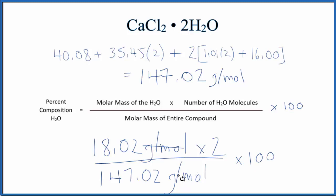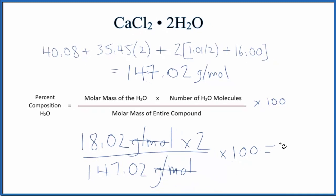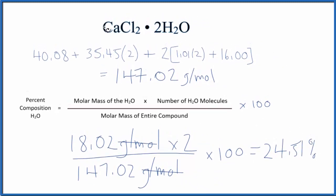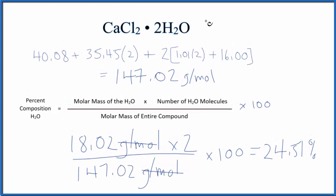Notice that grams per mole is on the top and the bottom — that cancels out. We end up with 24.51%. So that means that if we looked at the mass of this entire compound, 24.51% of the mass would be due to the water in the calcium chloride dihydrate.